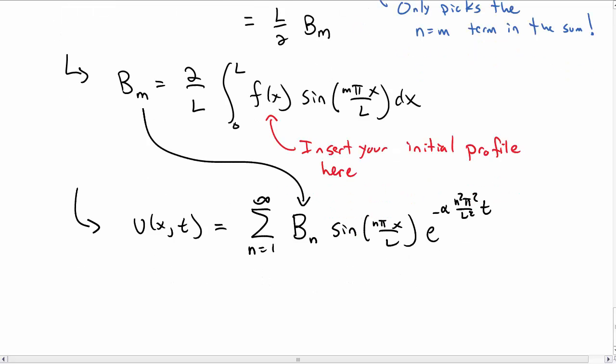And then you have your solution to your differential equation for a set of initial conditions and set of boundary conditions to describe the temperature of a bar as a function of both position and time. So that's an example of how to use separation of variables for the heat equation.